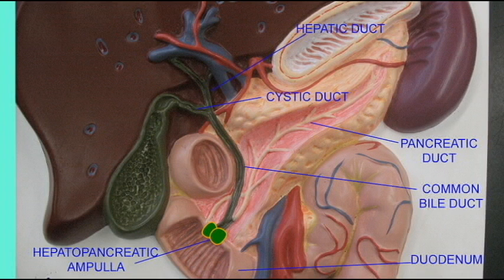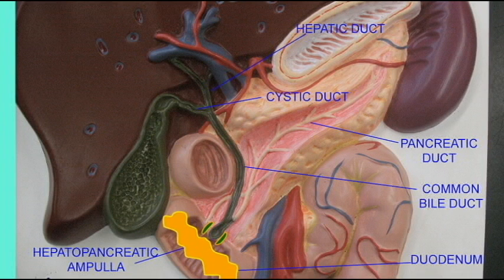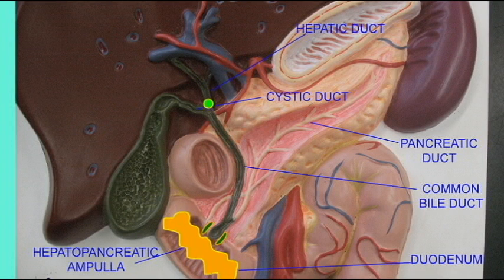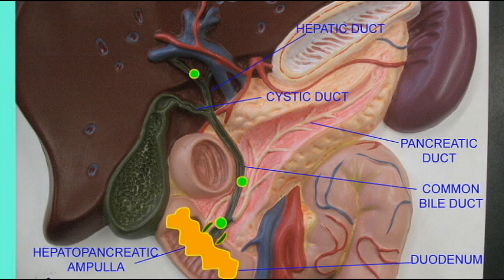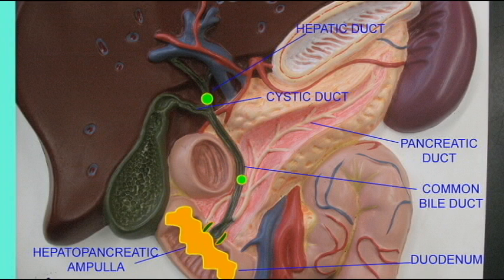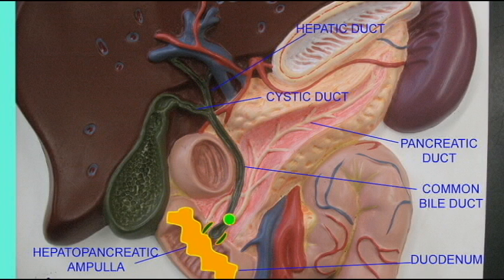When there is food in the small intestines, bile salts made from the liver can pass through the hepatic ducts into the common bile duct, where they will flow into the small intestine and emulsify the lipids of our diet.